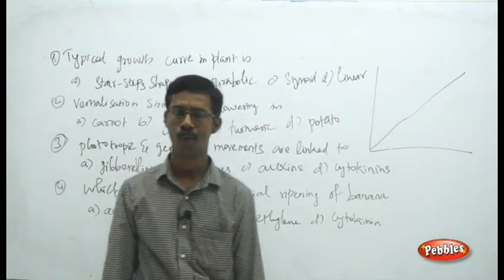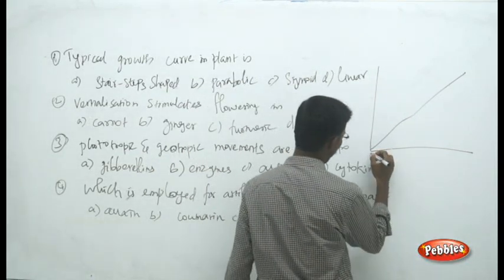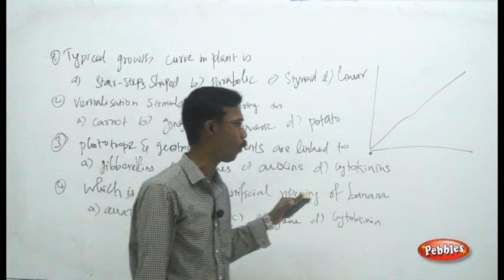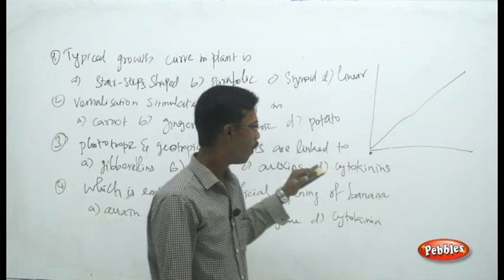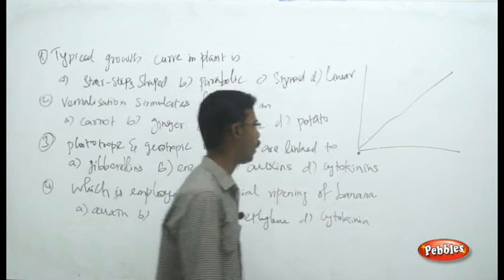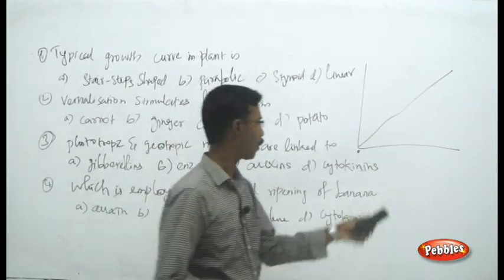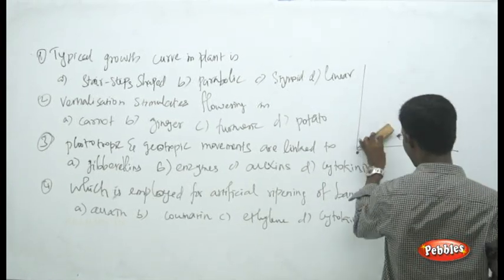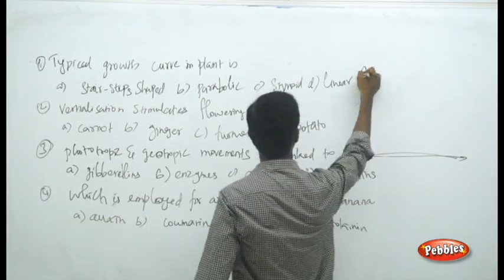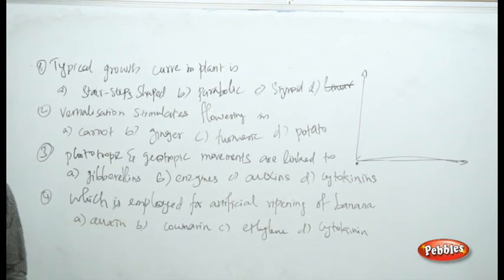You can easily eliminate linear growth. The remaining choices are sigmoid, parabolic, and stair-shaped. Whatever the plant system, normally it goes through an adaptation phase. We can divide growth stages into: first the lag phase, then the log phase, then the stationary phase, and in some plants a senescence stage.